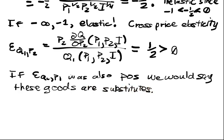That is, if the price of one of them goes up, then I want to get the other one, and if it goes down, I care less about getting the other one. If EQ1,P2 was negative, these are complements. That is, I want to buy them together, I want to be able to get both at the same time.